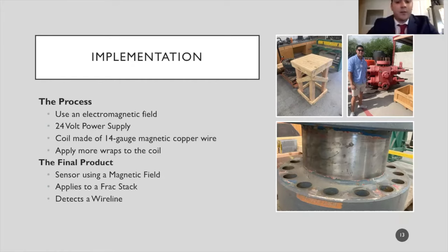For the final product, the sensor uses an electromagnetic field to detect the wireline, and it is applied to the top of the FRAC stack so there's no interference with any fluids coming into or out of the FRAC stack. The sensor is able to detect wireline inside the FRAC.